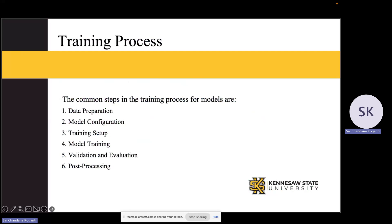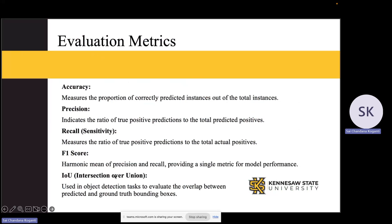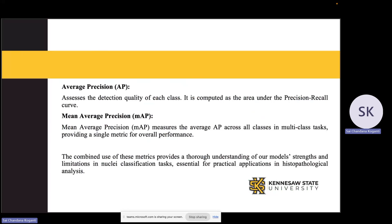This is the training process, which includes common steps: data preparation, model configuration, training setup, model training, validation and evaluation, and finally post-processing. I will focus on the evaluation step, where we used metrics including accuracy, precision, recall, F1 score, and IoU, as well as AP and mAP — average precision and mean average precision. These metrics provided a comprehensive view of each model's strengths and weaknesses.